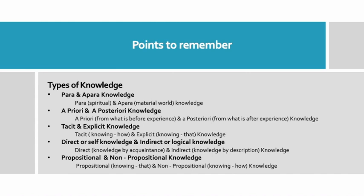We conclude the video with points to remember. Is video mein humne types of knowledge ke baare mein jaana, jismein humne para and apara knowledge, a priori and a posteriori knowledge, tacit and explicit knowledge, direct and indirect knowledge, aur propositional and non-propositional knowledge ke baare mein discuss kiya. Knowledge ke theoretical and practical aspects ke baare mein jaana. Construction of knowledge mein theoretical and practical dono hi aspects important hain, kyonki innate ideas aur sense experience dono hi knowledge construction mein help karte hain. Knowledge construction mein sense perception ke liye previous knowledge base ban jata hai, aur usi base par new knowledge construct ho jata hai.